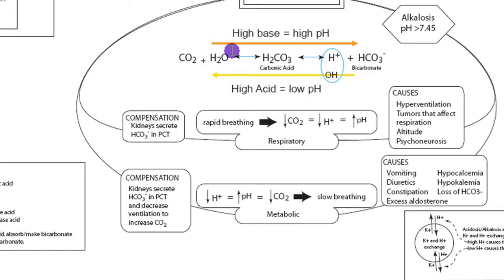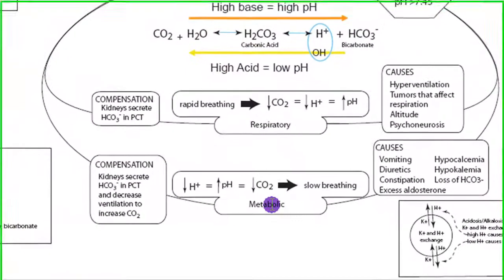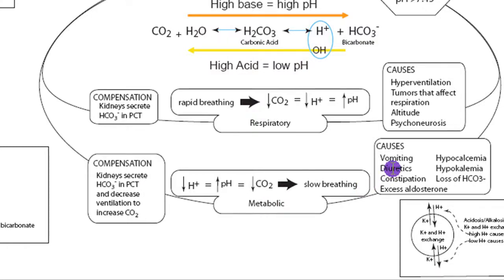If either alkalosis or acidosis is caused by anything other than the respiratory system, it is called metabolic alkalosis or metabolic acidosis. In metabolic alkalosis, the cause could be anything that decreases hydrogen ion: vomiting removes the stomach's acid pool, making the body more basic; diuretics can cause extreme loss of sodium, which carries hydrogen with it. In constipation, there's more time to absorb bicarbonate from the GI tract, so more bicarbonate means more basic, causing metabolic alkalosis.